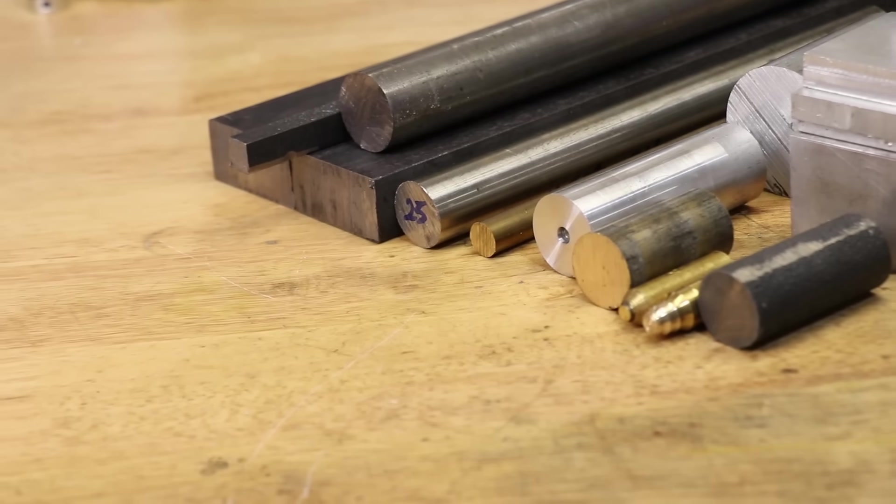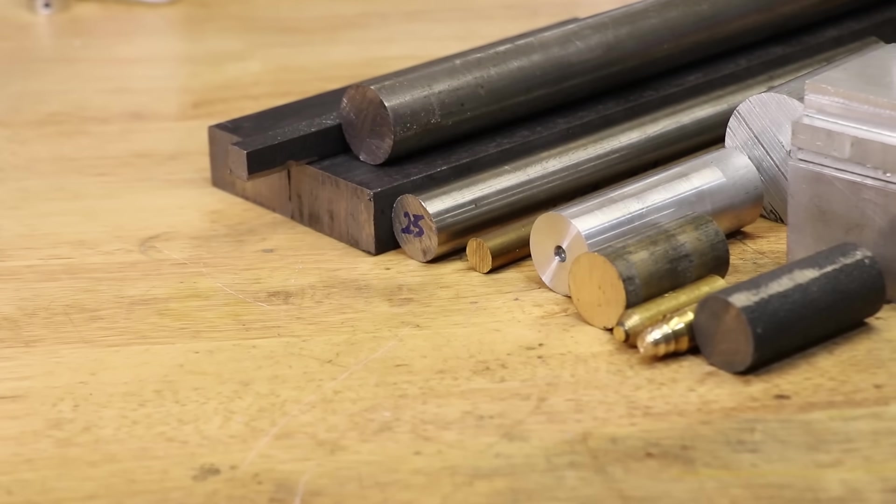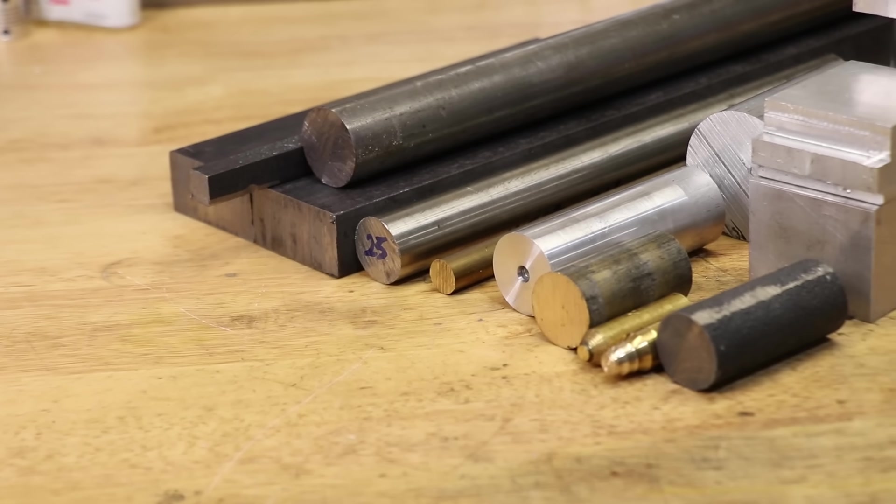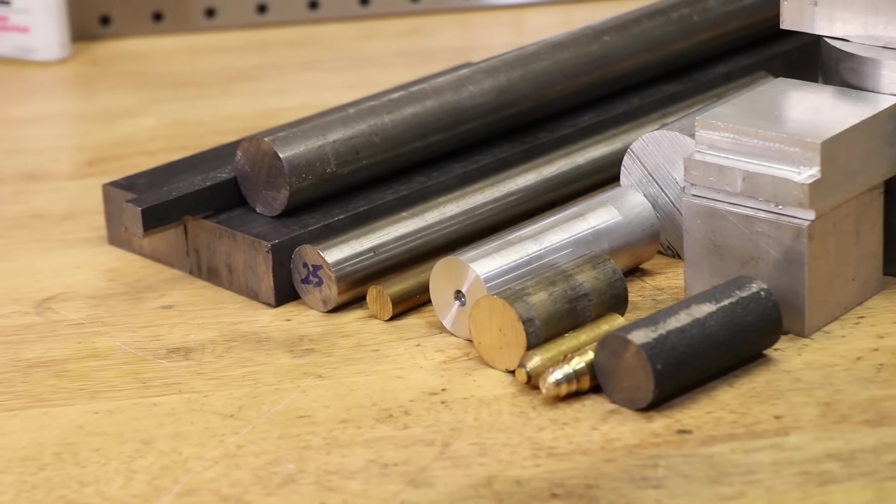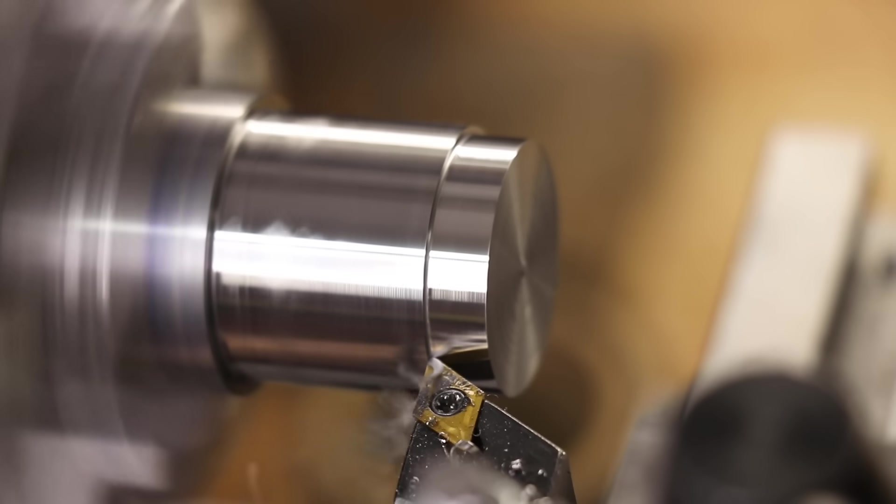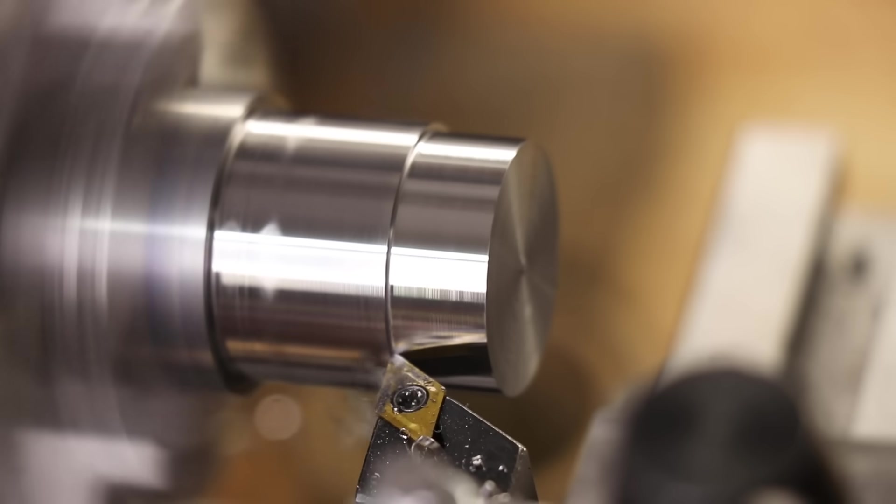I'll timestamp later in the video for when I actually talk about where I get my material, since that's aimed towards Australians. But what I want to do first is go through the materials that I've used, what they're like to machine, and what grades that I use. And I should note, Quinn at Blondiehacks did a very similar video aimed towards North American viewers and it's definitely worth checking out.